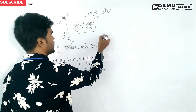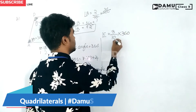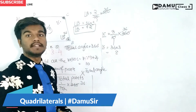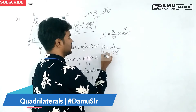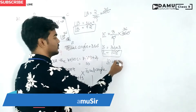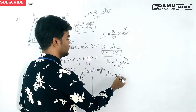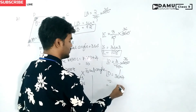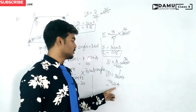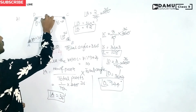For angle C, the number of parts is 3. So angle C equals 3 by 10 into 360, which gives 36 multiplied by 3, equal to 108 degrees. For angle D, the number of parts is 4. So angle D equals 4 by 10 into 360, giving 36 multiplied by 4, which equals 144 degrees.